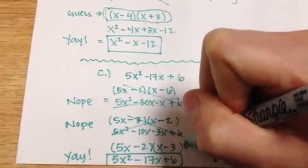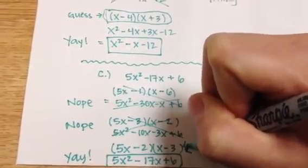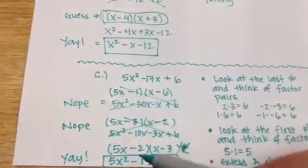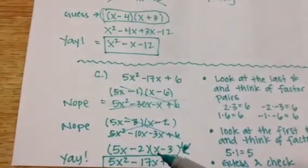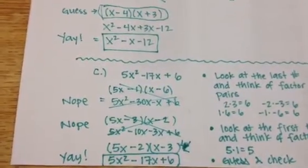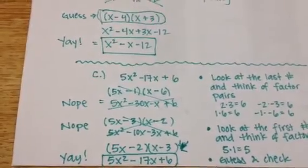I should have put the box around this. So I'm going to do it right here. This guy is my answer. So 5x squared minus 17x plus 6 factors to 5x minus 2 times x minus 3. And so you just guess and check until you get it. Alright, have a good night and I will see you in class tomorrow. Thanks.